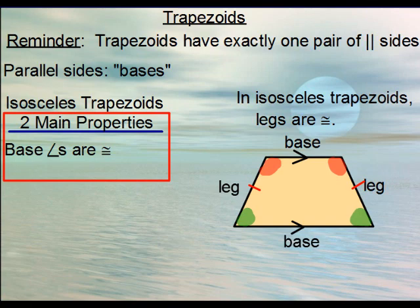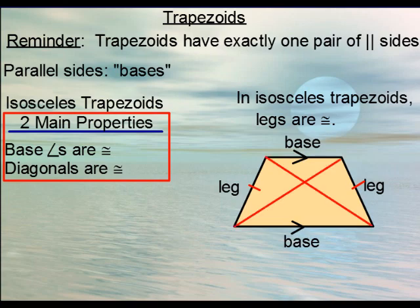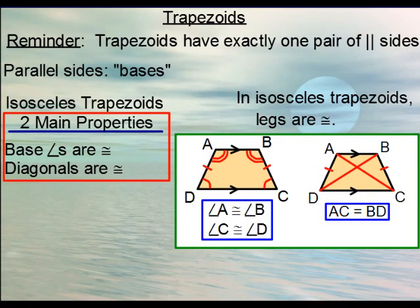Another property of isosceles trapezoids involves the diagonals — the diagonals are congruent to one another. This comes up in more advanced problems: if the two legs are the same length, then the two diagonals are the same length. In a nutshell: base angles are equal and diagonals are equal.